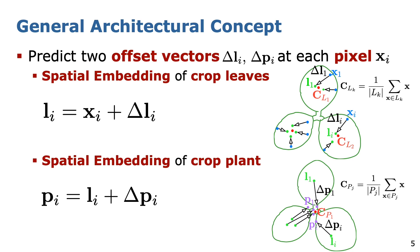The second set translates these pre-clustered pixels towards the center of their associated plant instance, resulting in spatial embeddings Pi as shown in the bottom-left. Thus, we model a plant as a union of its leaves.